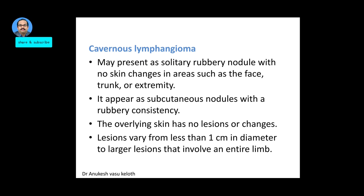Cavernous lymphangioma may present as a solitary, rubbery nodule with no overlying skin changes in areas like the face, trunk, or extremity. They are subcutaneous nodules with a rubbery consistency. Depending on the size of the lesion, they can grow up to sizes that involve the entire limb, but are usually around 1 cm or more.